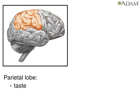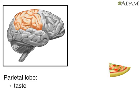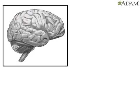There are two parietal lobes, one on each side of the brain. The parietal lobes are located behind the frontal lobe, towards the back of the head, and above the ears. The taste center is located in the parietal lobes.